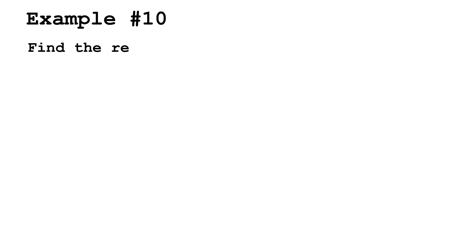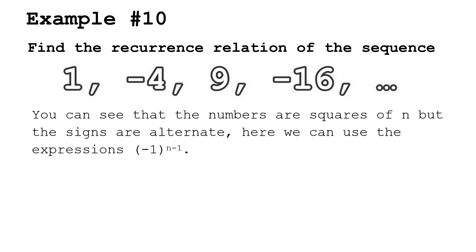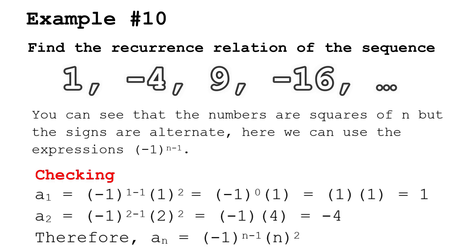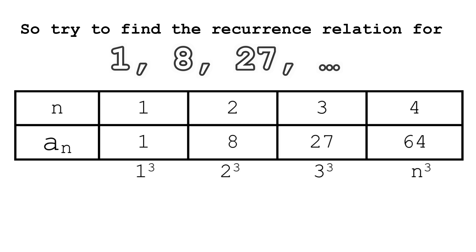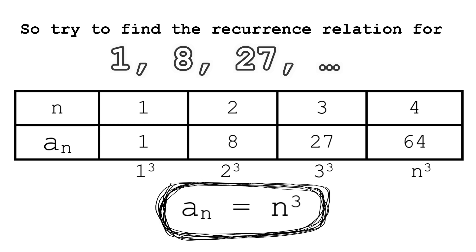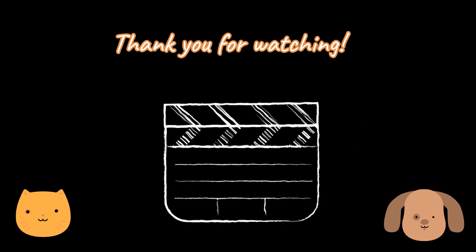Example number 10: find the recurrence relation of the sequence 1, −4, 9, −16. The numbers are squares of n but the signs are alternating. We can use the expression (−1)^(n−1), therefore a(n) = (−1)^(n−1) × n². Now try to find the recurrence relation for the sequence 1, 8, 27. If your answer is a(n) = n³, then you are correct. That ends our lesson. Don't forget to subscribe and hit the notification bell for more Pinoy Math videos. Happy learning!